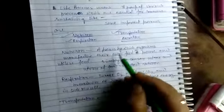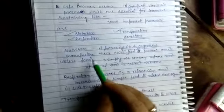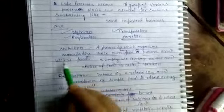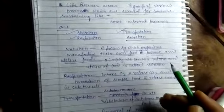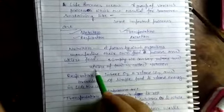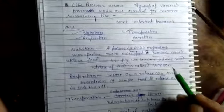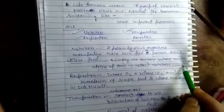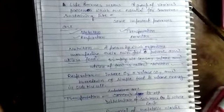First is nutrition. What is nutrition? Nutrition means a process by which organisms manufacture their own food or procure and utilize food. Simply we can say intake and utilization of food is called nutrition. That is much essential for each and every person, for each and every organism.